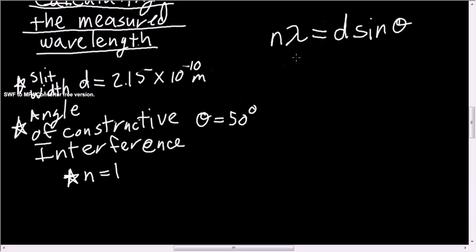So I'm trying to find wavelength. So I'll solve for wavelength. D sine theta over n.